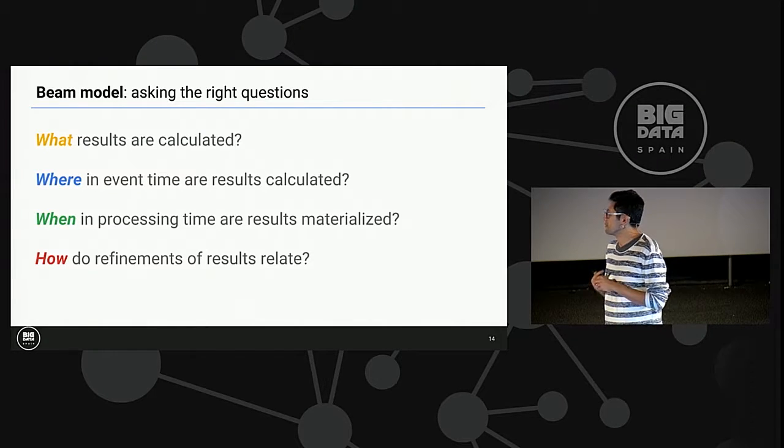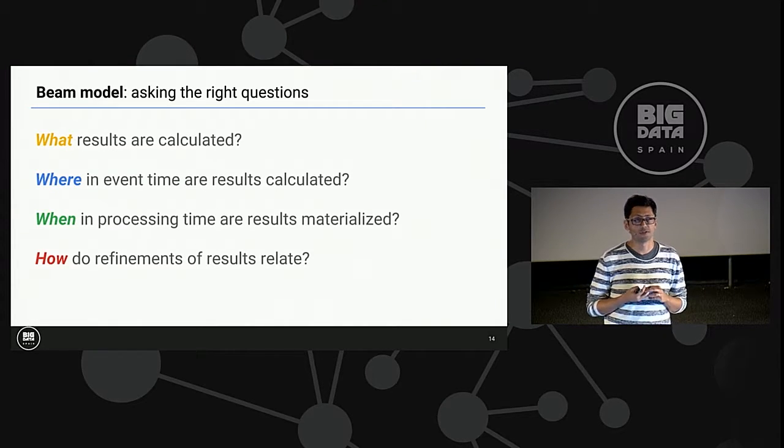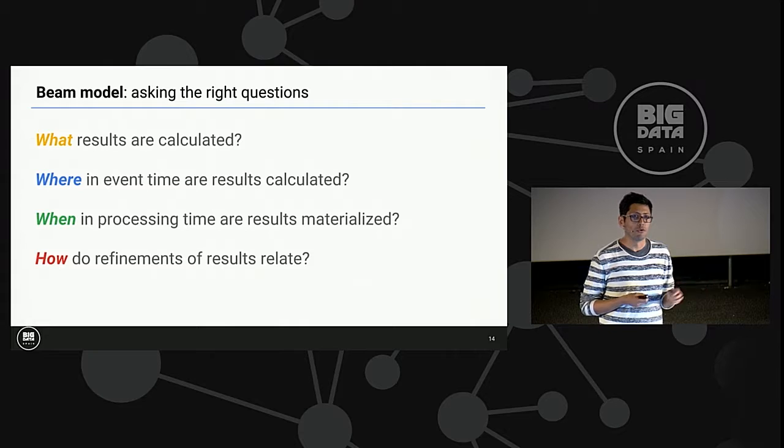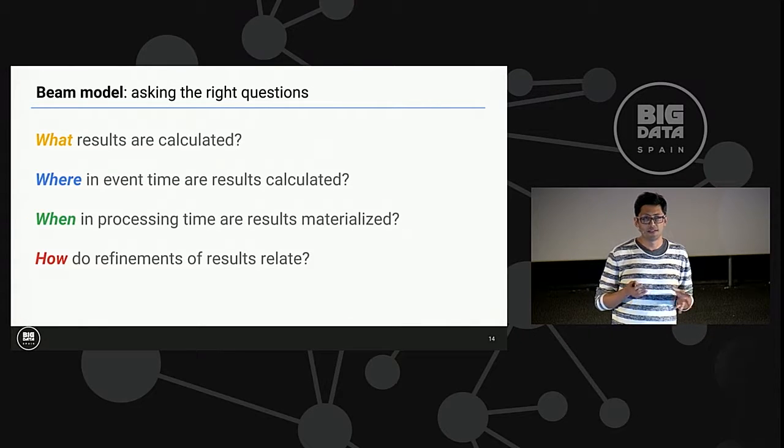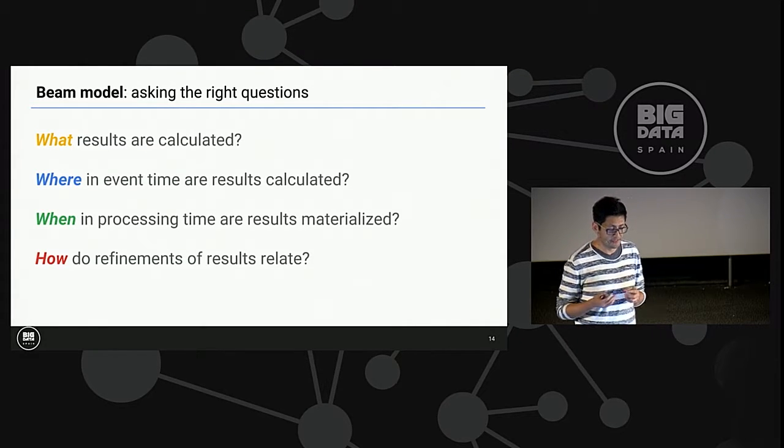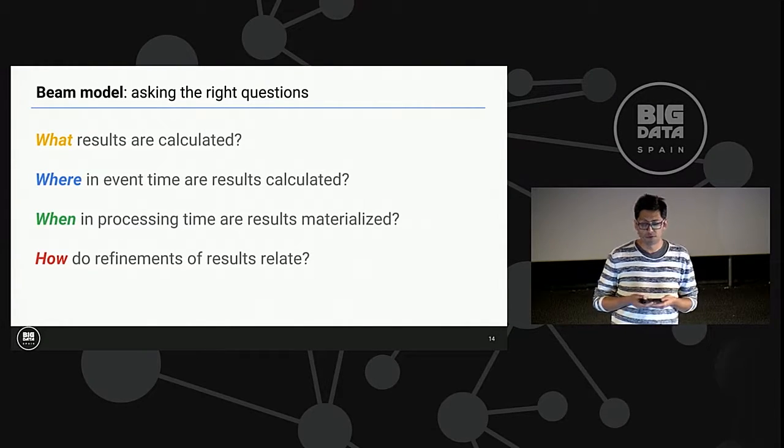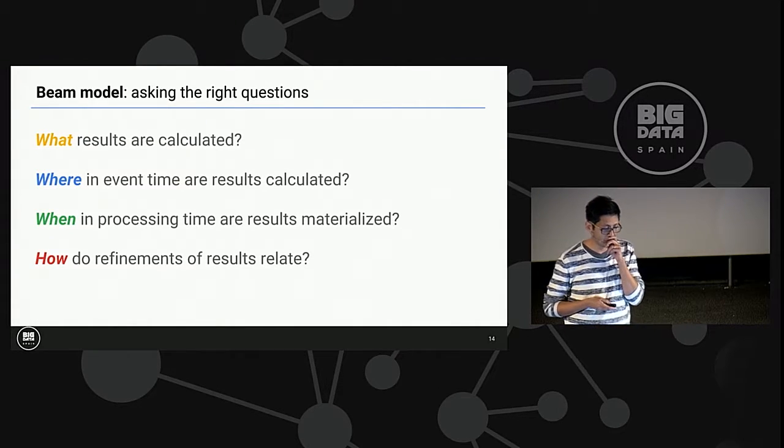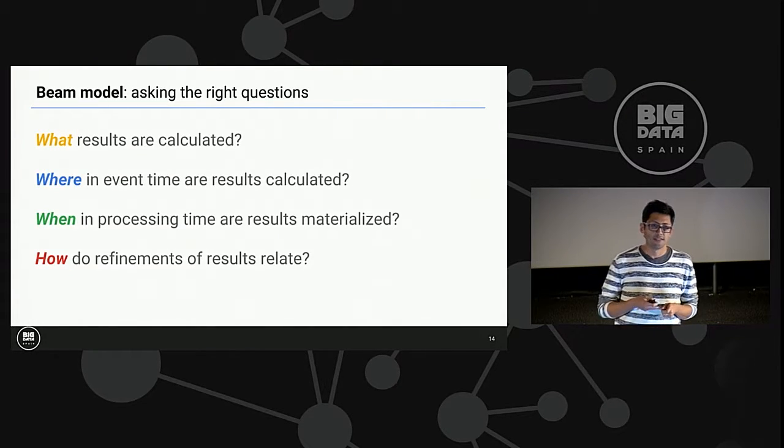The Beam model has four questions that I think is the same way to start any stream processing job. The first one is, what results are calculated? What corresponds exactly to the batch model. And then there come the questions that deal with time and with these differences that we can have between event time and processing time. The first question is, when in event time are we going to calculate the results? The next question is, when are we going to materialize these results? We are going to see this more clearly with the presentation later on. And then how we are going to refine these materializations.